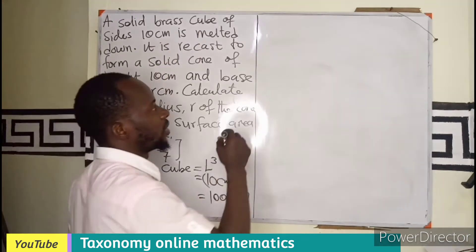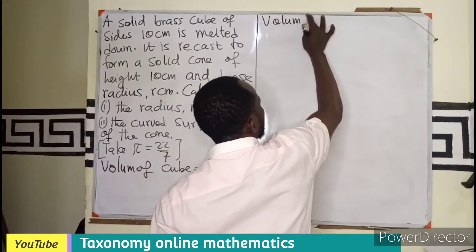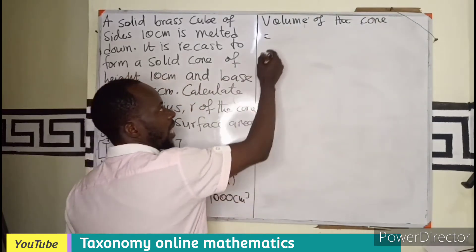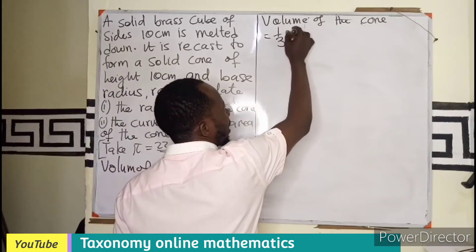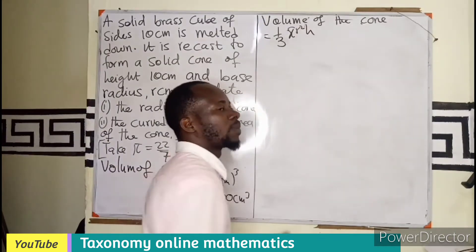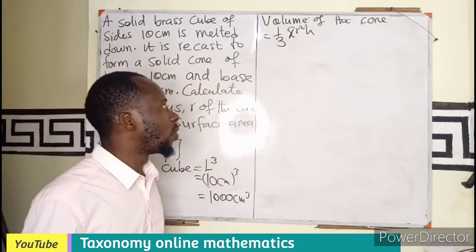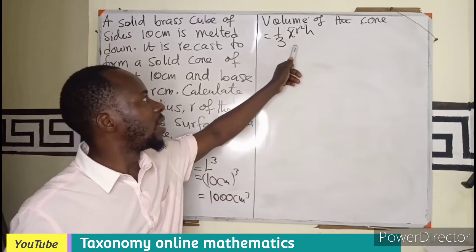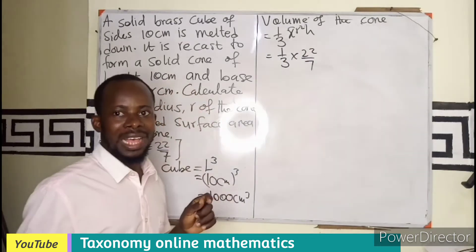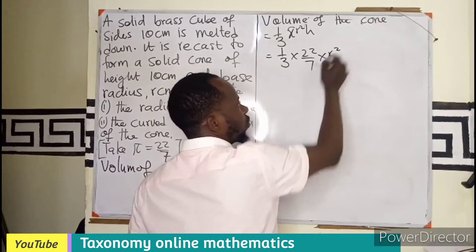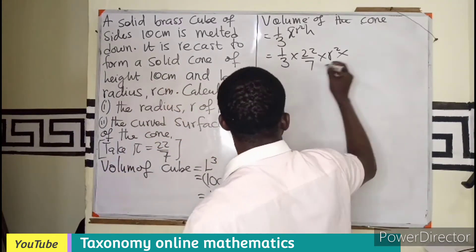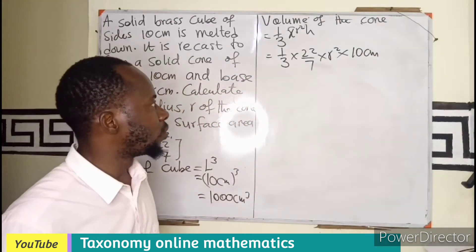Now let's find the volume of the cone. We know a volume of a cone is given by one-third times the base area, which is π r square, times the height. Just like the pyramid. So in this case, we are going to find the values that we can get. This means I have 1 over 3 times 22 over 7, as in case of pi, then times my r square, which I don't know, then times the height of the cone, which is given as 10 centimeters.